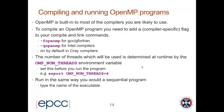That brings us to the practical aspects of how to compile and run OpenMP programs. OpenMP is built into most compilers you're likely to use. To compile an OpenMP program, it's just a question of adding a compiler-specific flag to your compile and link commands. For example, it's -fopenmp for GNU compilers and -qopenmp for Intel compilers. For some compilers, like Cray compilers available on Archer, OpenMP is switched on by default and there is a flag to turn it off.